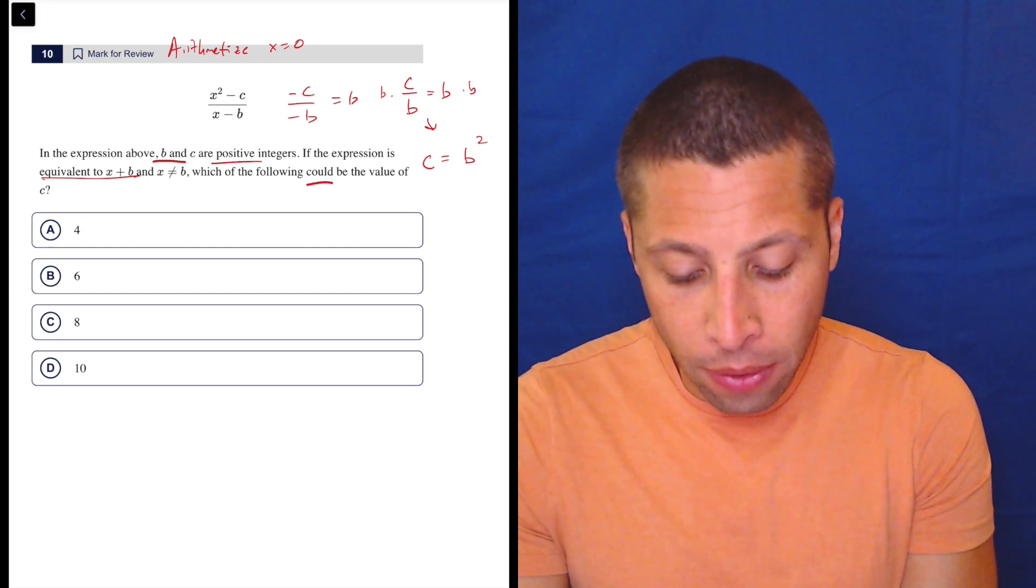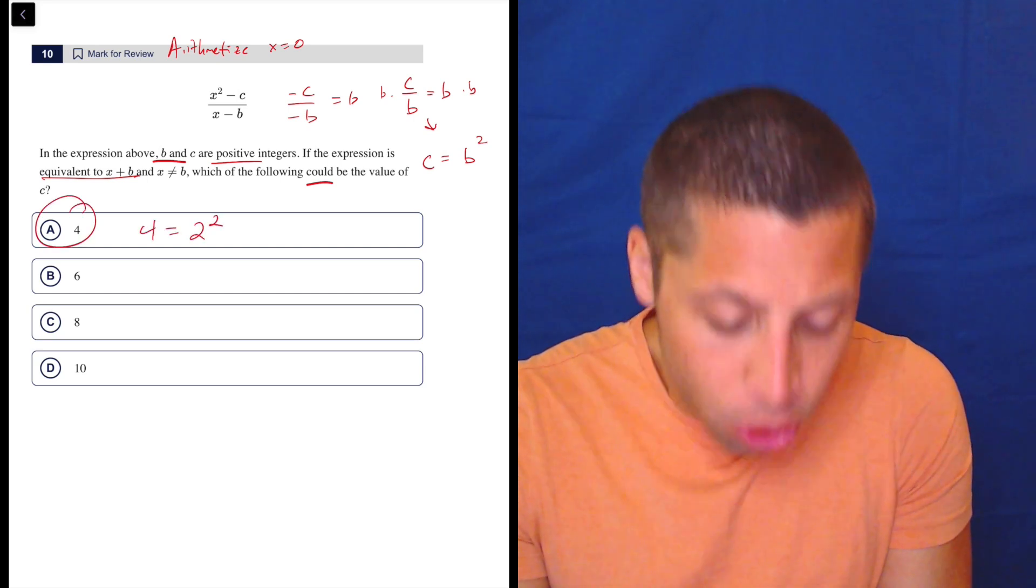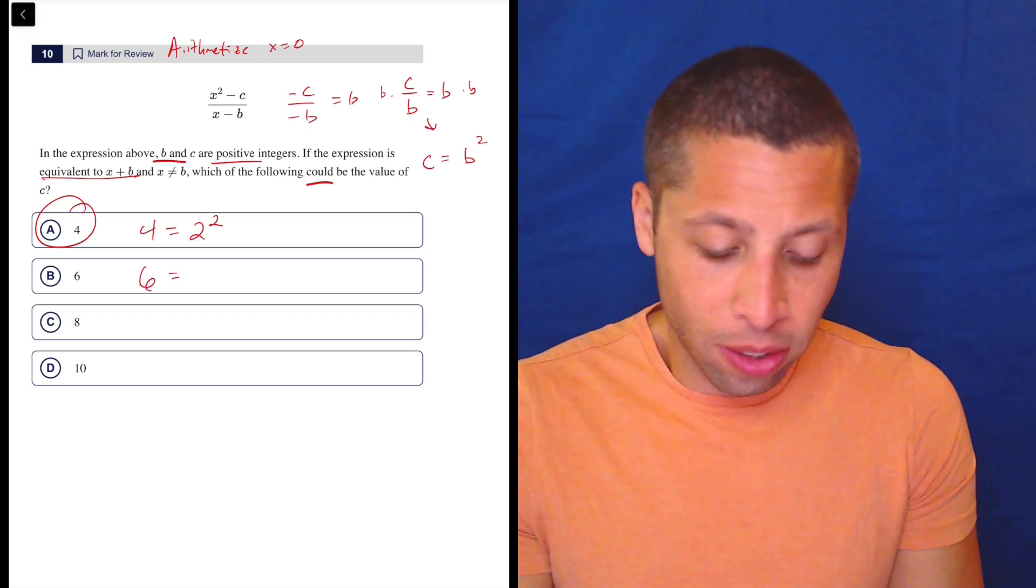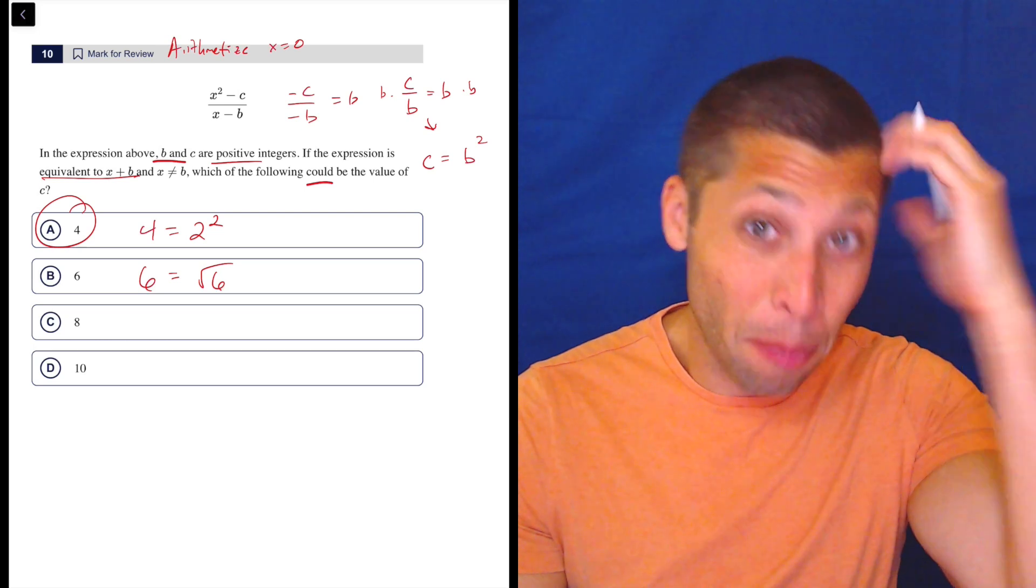So for example, if C were four, then B could be two. But if C were six, well, then what's B? It's the square root of six. That's not a nice number. That's not an integer.